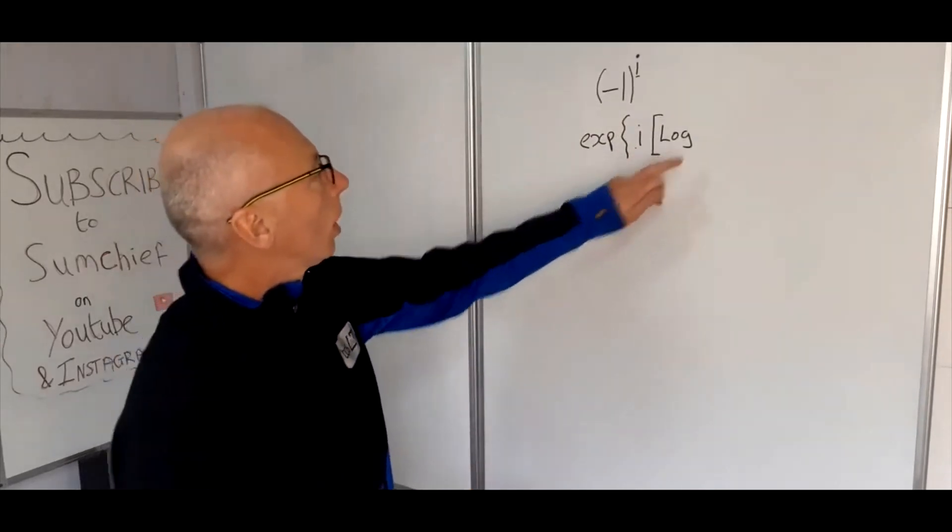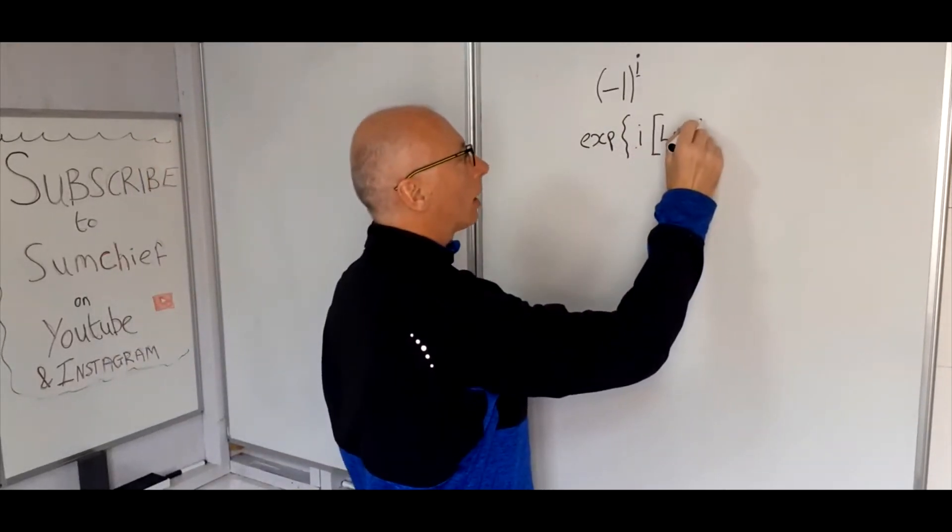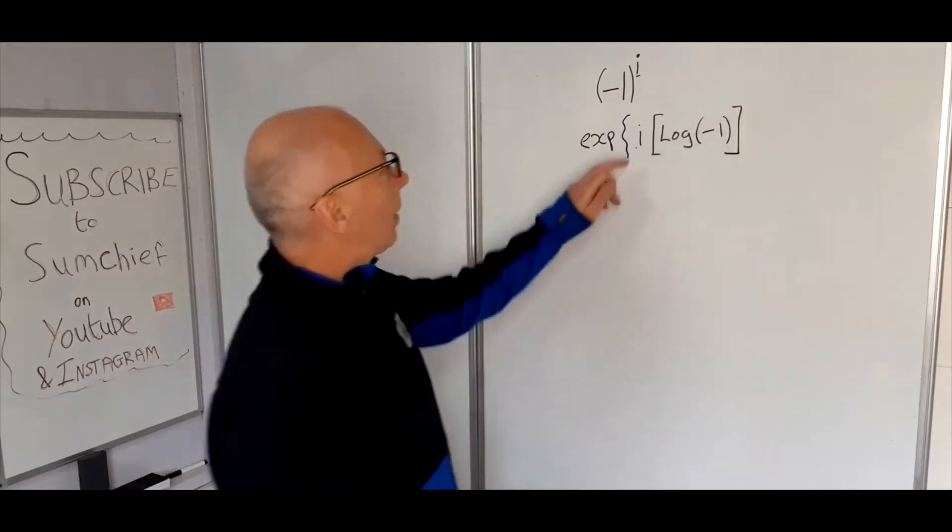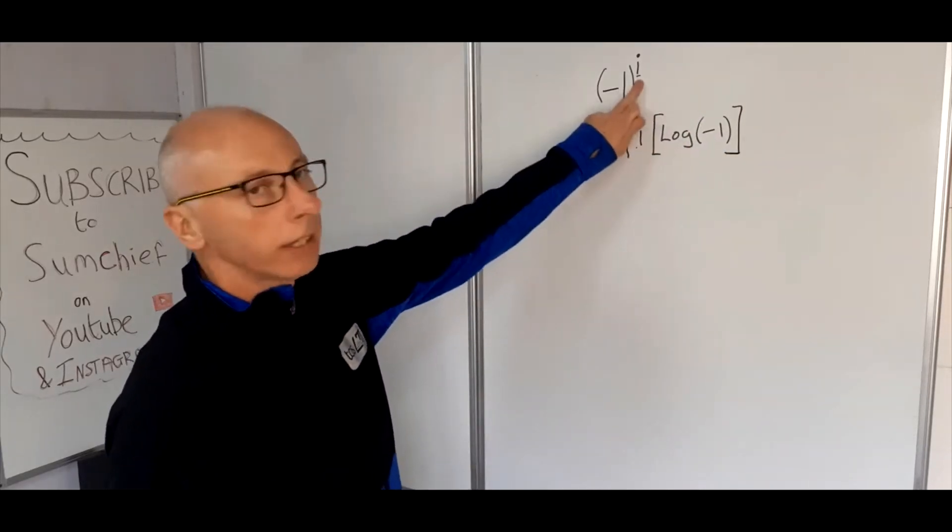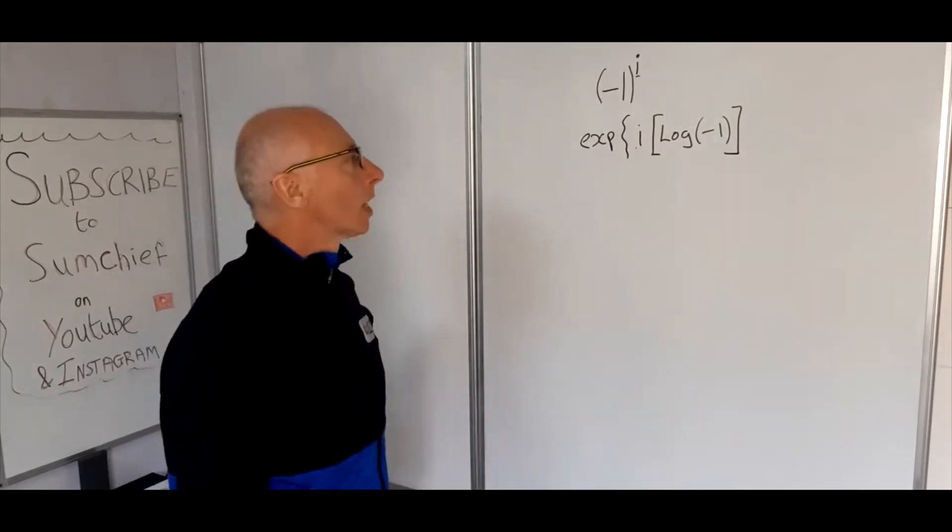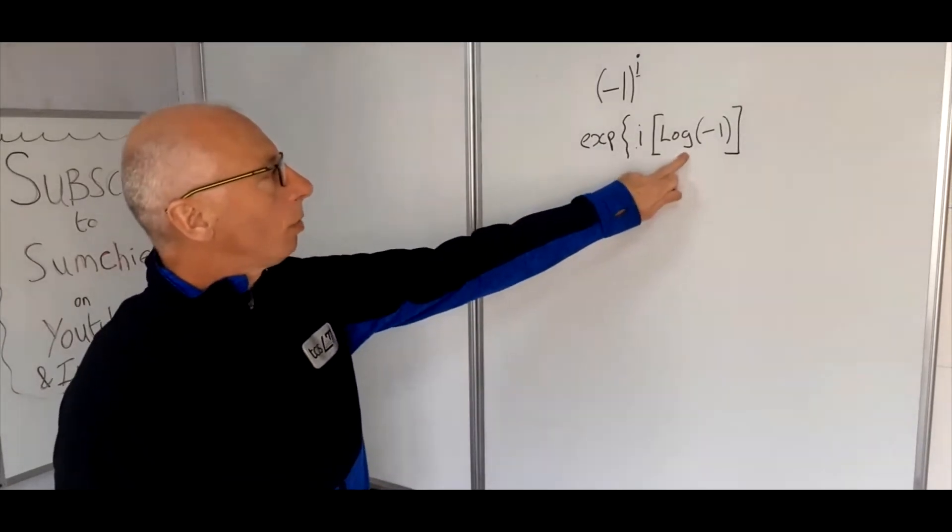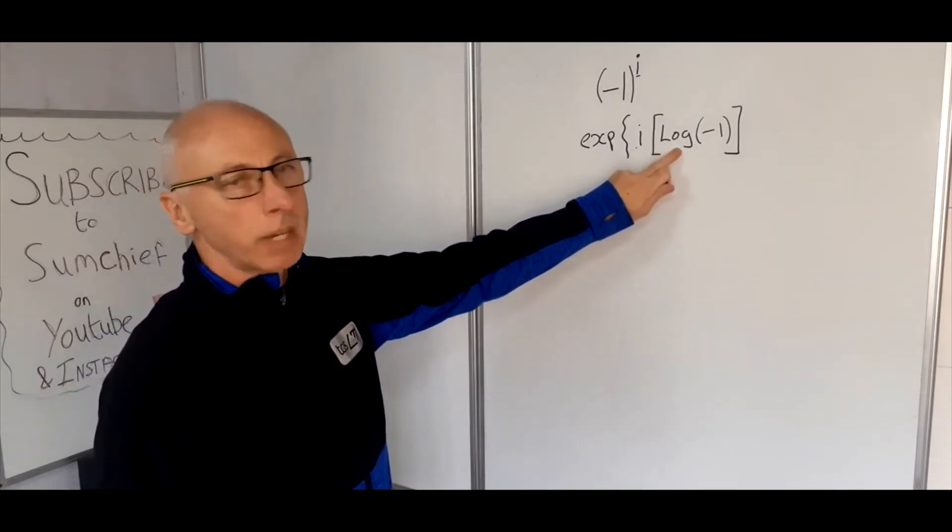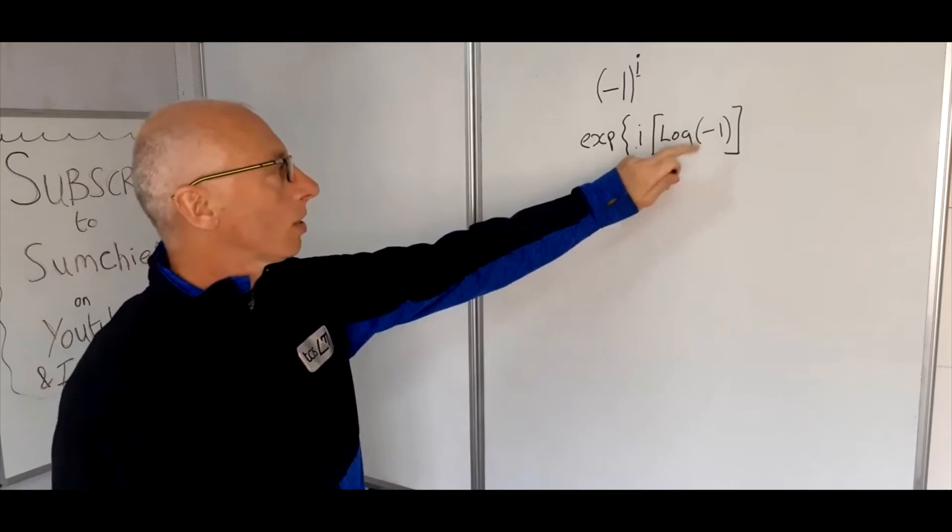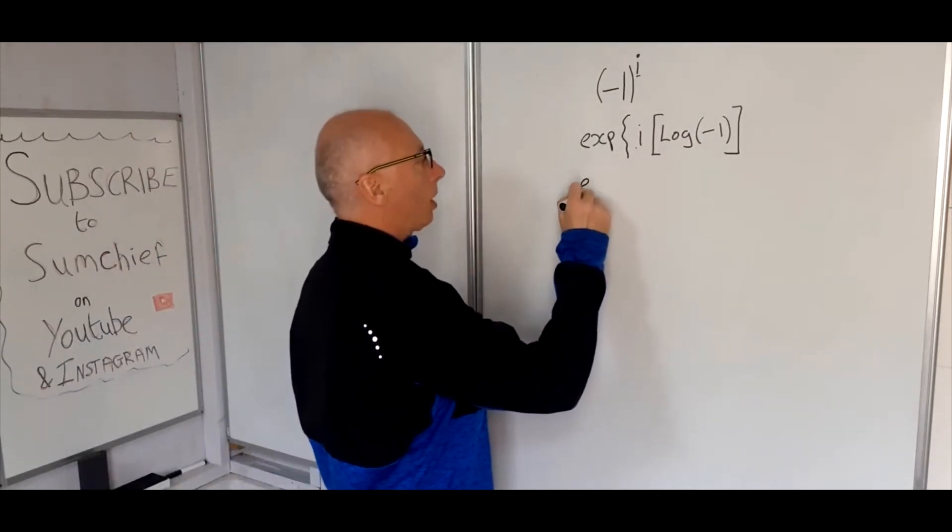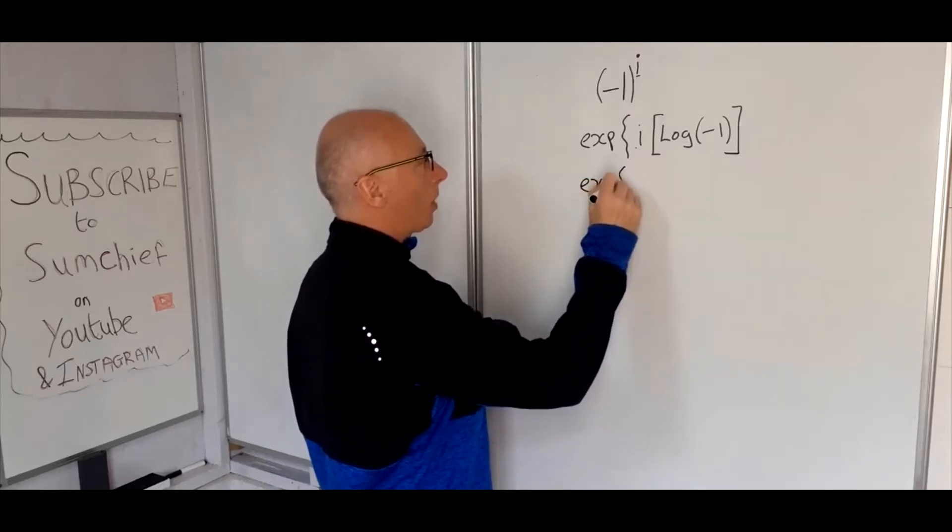So minus one with the log of minus one here, and the i is what we multiply it by, and then we take the exponential of everything. Okay, right, so we've got principal log, so that's just the main result of log. Obviously there's infinitely many answers to this question, log of minus i, but we just want the principal one. So what we're going to do is we're going to expand further on this.